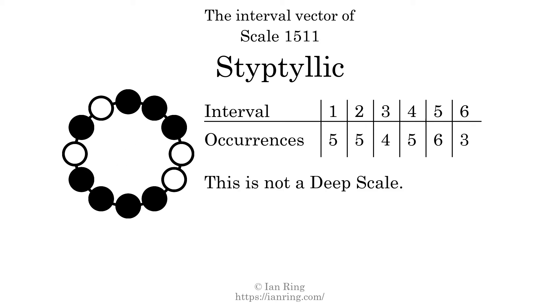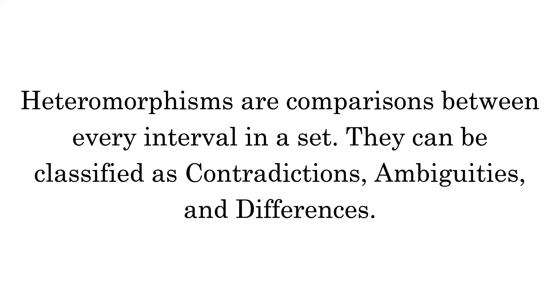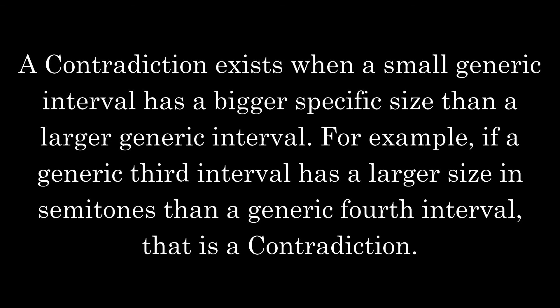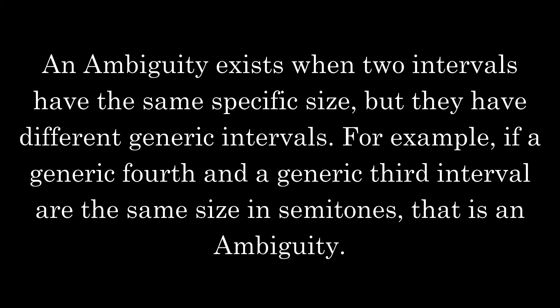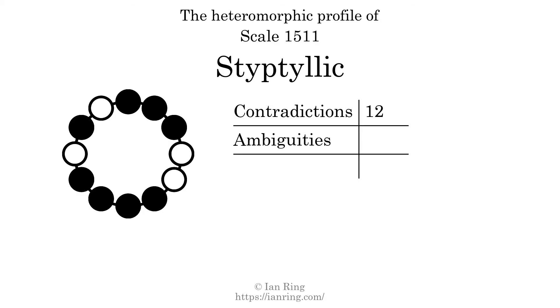Each interval does not appear in this scale a unique number of times, so this is not a deep scale. Heteromorphisms are comparisons between every interval in a set. They can be classified as contradictions, ambiguities, and differences. A contradiction exists when a small generic interval has a bigger specific size than a larger generic interval. The number of contradictions in this scale is 12. An ambiguity exists when two intervals have the same specific size but different generic intervals. The number of ambiguities in this scale is 44.